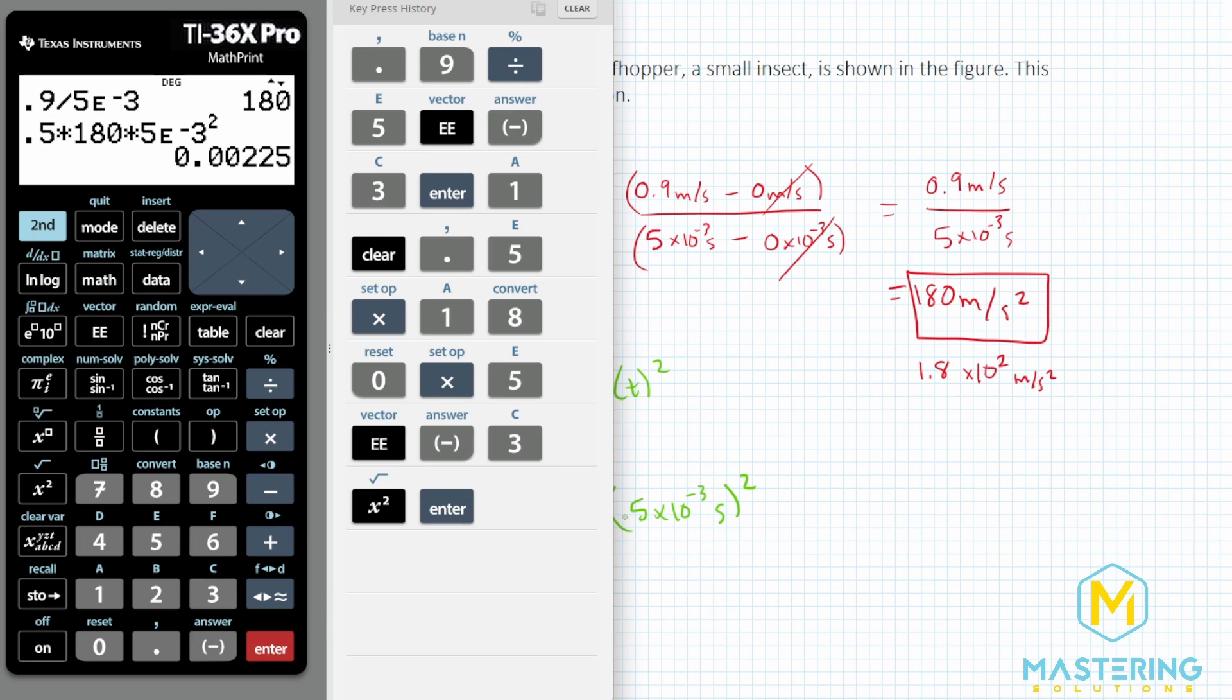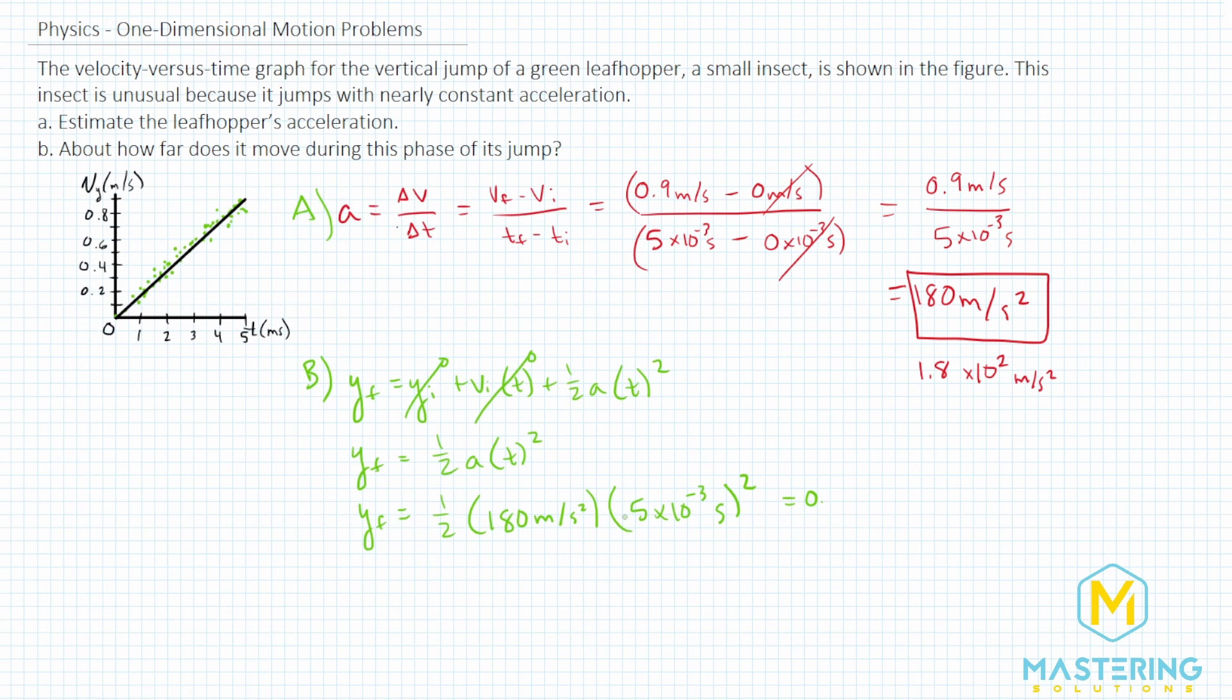So we have 0.00225. And what is that going to be? It's the y final. So that will be in meters.